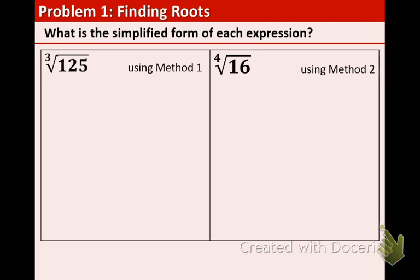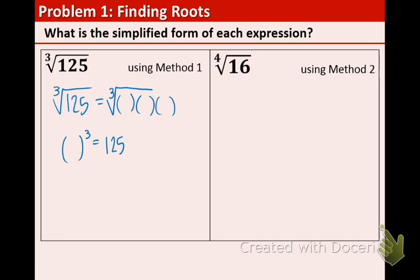Let's take a look at some problems using two different methods. The first method is keeping everything under the radical. For the cube root of 125, you keep the 3 in front and think: what number to the 3rd gives me 125? You are looking for the same number three times that multiplies to give you 125. The answer is 5, since 5 to the 3rd equals 125. So when you see a 3 outside as the index, you look for 3 of the same number that gives the big number underneath, and you take out one of those 5s.